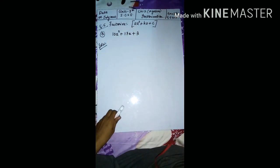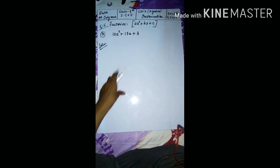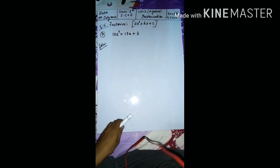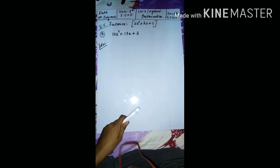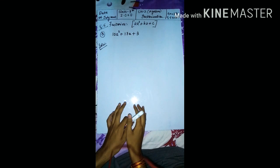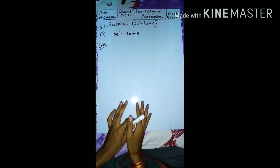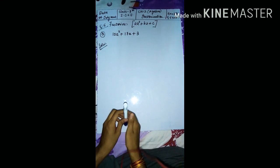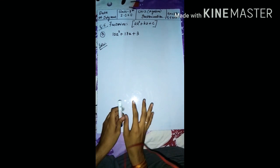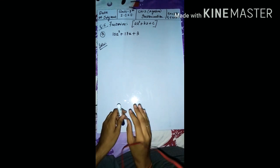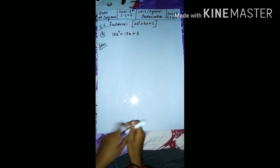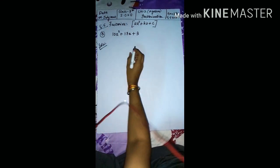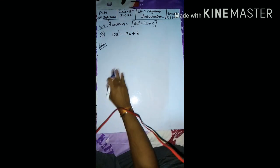I am doing part (a), which is 10a² + 17a + 3. We need to factorize this. Whatever concept you studied in the previous 4 questions, we are going to use the same concept but in a different way. Let us start with this one.